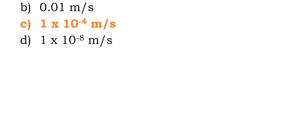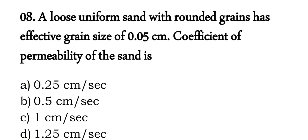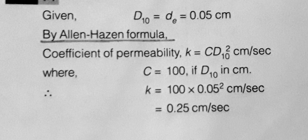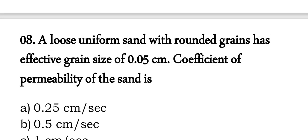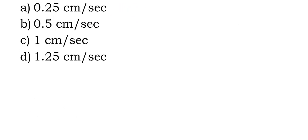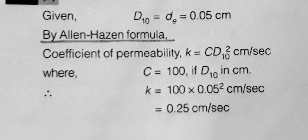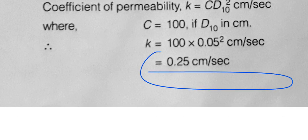Question 8: a loose uniform sand with rounded grains has an effective grain size d10 of 0.05 cm. Find the coefficient of permeability using Hazen's formula: k = C × d10². With C = 100 and d10 = 0.05 cm, we get k = 100 × (0.05)² = 100 × 0.0025 = 0.25 cm per second.